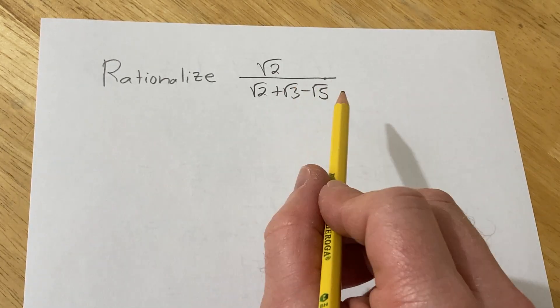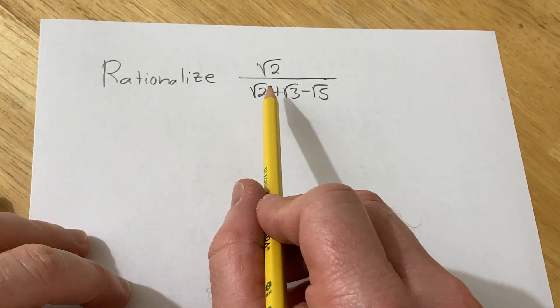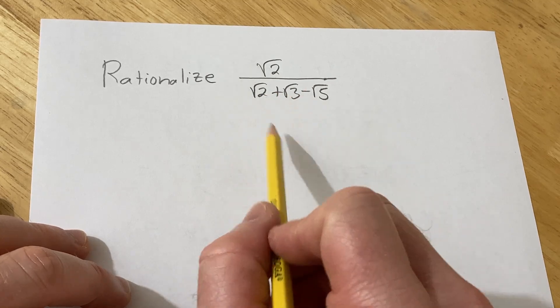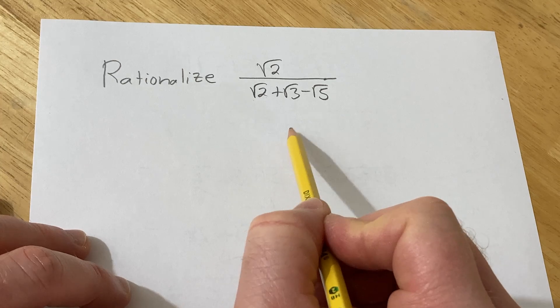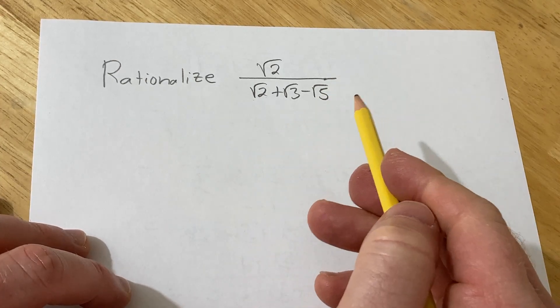Hi, in this problem we are going to rationalize. Basically we want to eliminate all of the square roots on the bottom here. So we have the square root of 2 over the square root of 2 plus the square root of 3 minus the square root of 5.